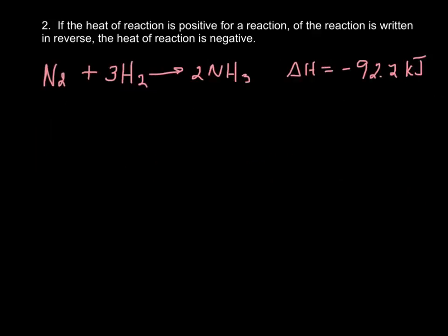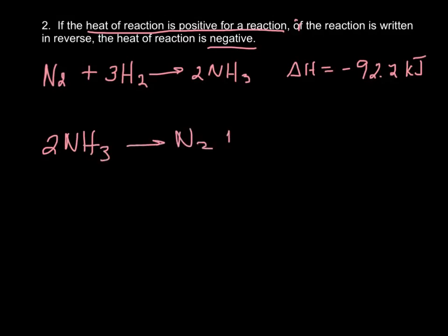The second law is: if the heat of reaction is positive for a reaction, and the reaction is written in reverse, the heat becomes negative. So, for instance, if I took N₂ + 3H₂ → 2NH₃ and wrote it in reverse — 2NH₃ → N₂ + 3H₂ — then the heat becomes positive 92.2. That's the second law of thermochemistry.